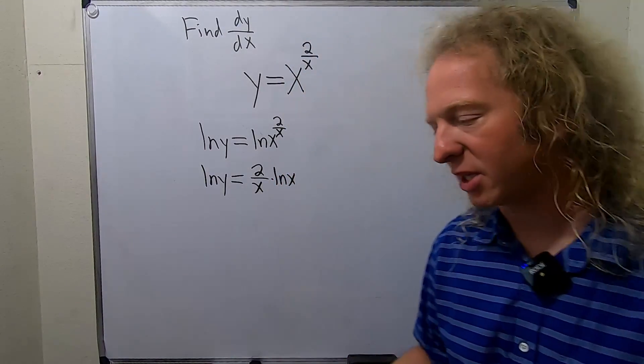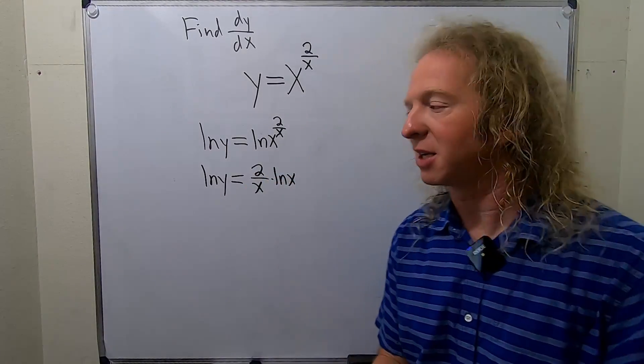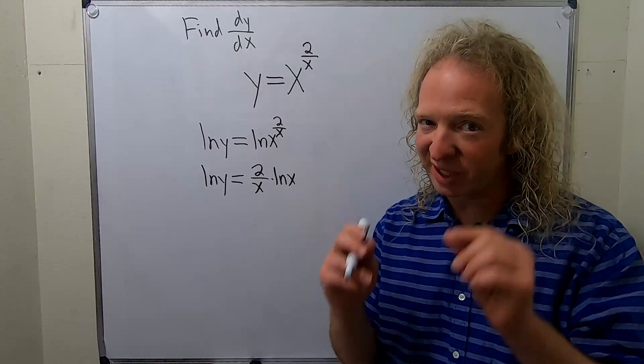The next step is probably the hardest step. We have to actually differentiate both sides with respect to x. So here's where it gets a little funky. We're going to use implicit differentiation.